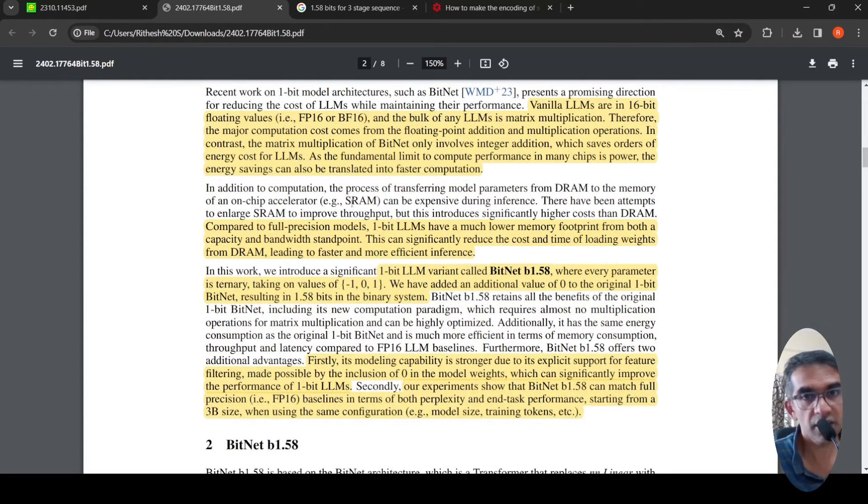So what they are saying is, in addition to computation, you have this transferring of model parameters from DRAM to your GPU chip, which also increases costs. Compared to full precision models, one bit LLMs have much lower memory footprint from both the capacity and bandwidth standpoint. This can significantly reduce the cost and time of loading weights from DRAM, leading to faster and more efficient inference.